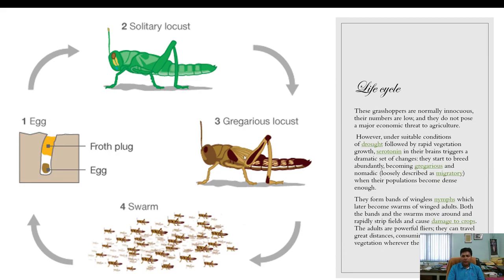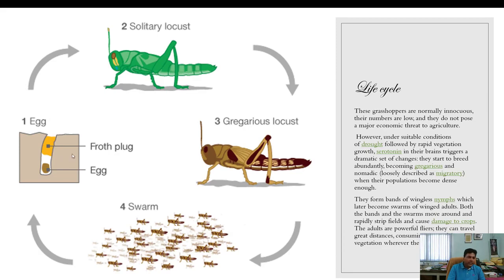The gregarious phase locusts form bands of wingless nymphs which later become swarms of winged adults. Both the bands and the swarms move around rapidly across fields and cause damage to crops. Both the nymphal bands and the swarming adults cause damage.